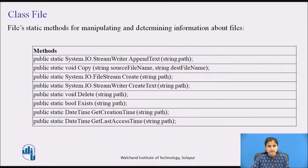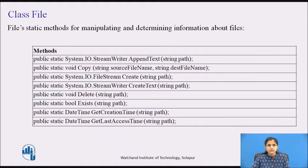The Copy method accepts two parameters: source file name and destination file name. It copies an existing file to a new file. Overwriting a file of the same name is not allowed. The destination file name cannot be a directory or an existing file. If the destination file exists, an IOException is thrown.